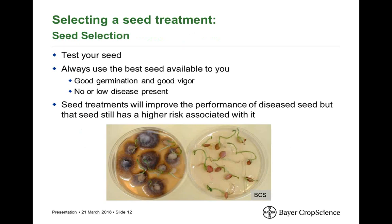When selecting a seed treatment, seed selection is critical. Always test your seed and use seed with good germination and good vigor. Seed that is physiologically old or has slow or poor germination stays in the ground longer, is exposed to soil-borne pathogens for a longer period, and actually releases exudates that are more attractive to those pathogens. Pick seed with no or low disease presence. Keep in mind: seed treatments will improve the performance of diseased seed or seed with moderate germination/vigor, but that seed still carries higher risk. The treatment will not completely eliminate that risk — it will only help with performance.